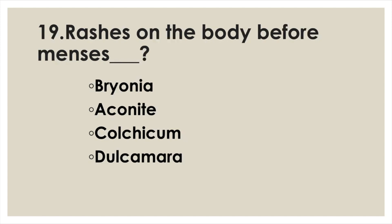Rashes on the body before menses: Option A: Bryonia. Option B: Aconite. Option C: Colchicum. Option D: Dulcamara. Answer: Option D, Dulcamara.